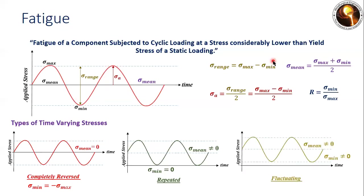The third type is fluctuating loading. From the schematic, we can clearly observe that the minimum stress should not be zero — it can be either in the tensile regime or in the compressive regime. Here, mean stress and maximum stress are also not zero.